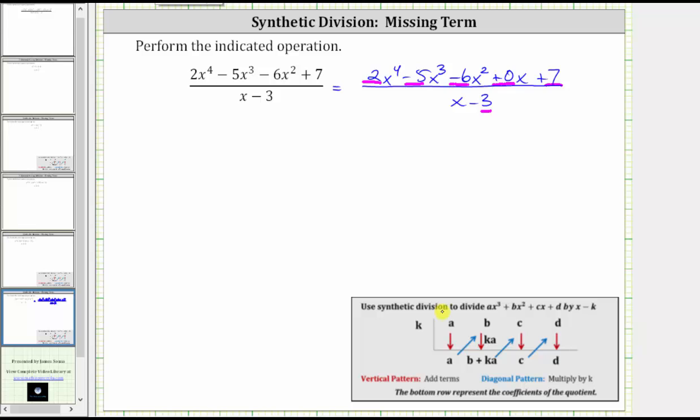Let's set up the table to perform synthetic division. We first list the coefficients and the constant term of the dividend, which again are two, negative five, negative six, zero, and seven. And then we have the table.